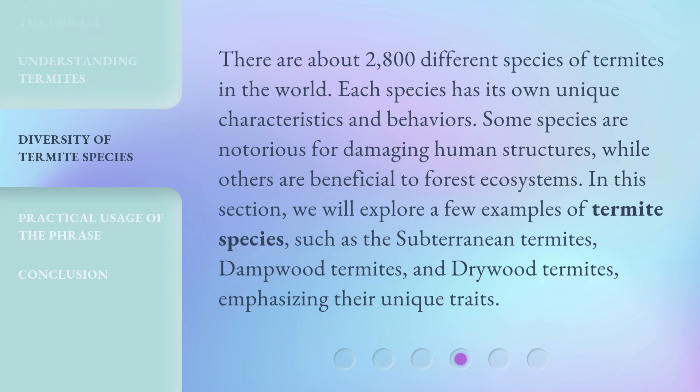There are about 2,800 different species of termites in the world. Each species has its own unique characteristics and behaviors. Some species are notorious for damaging human structures, while others are beneficial to forest ecosystems. In this section, we will explore a few examples of termite species, such as the subterranean termites, dampwood termites, and drywood termites, emphasizing their unique traits.